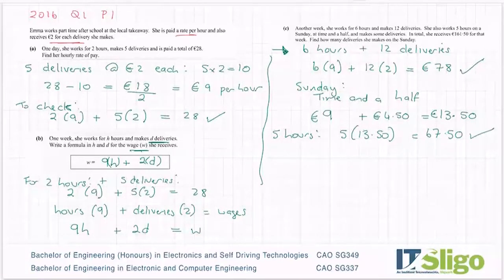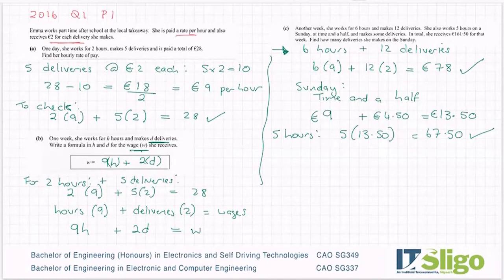So I have what she made during the week. I have her hourly rate on a Sunday. So whatever the difference is must be the deliveries. So let's add the 78 and the 67 together and then I'm going to subtract that from her full amount. So I'm getting 145 euros 50 for her wages so far.